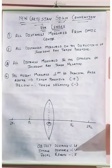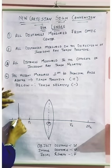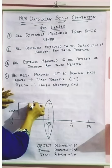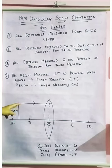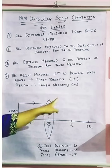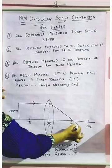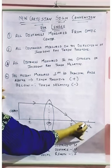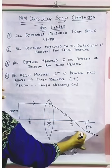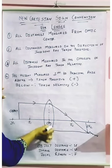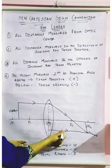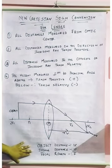Suppose I have kept my object here — this is the direction of my incident ray. All distances measured in the same direction as the incident ray are considered positive. So if my image is formed here, this distance measured from the optic center is in the direction of the ray, so it is considered positive.